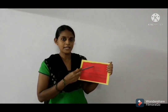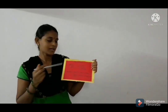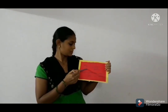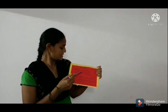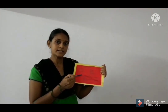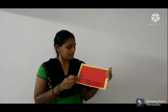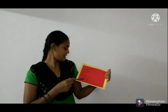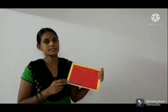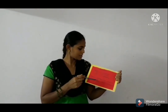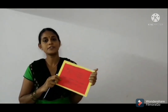The next organelle is vacuoles. The large empty spaces in the cell are called vacuoles. These vacuoles are large in size in plant cells. The function of vacuoles is to maintain the turgor pressure of the cell. All of you draw this diagram.